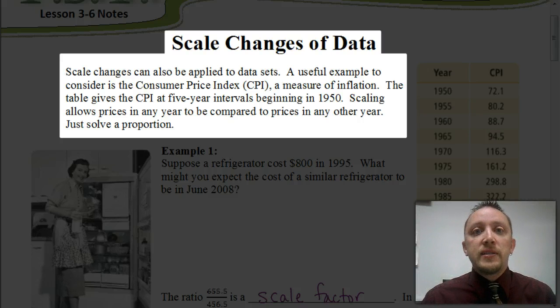how much would that same type of loaf of bread cost today? To do that, we would use what's called the Consumer Price Index. So, let's look at a story problem involving Consumer Price Index, and it'll help introduce this whole idea of how a scale change affects a set of data.